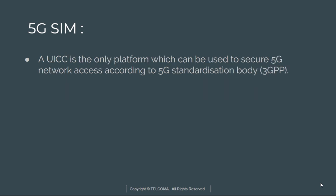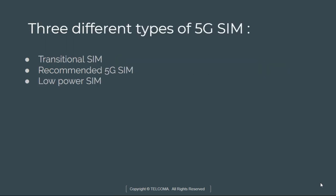The UICC (UI double C) is the platform used to secure 5G network access according to 3GPP. There are three different types of 5G UICC. It enables a device to authenticate the 5G network and has some additional capabilities. The first type is the traditional SIM, which provides the minimum capabilities to authenticate the network.